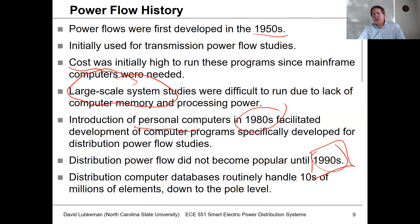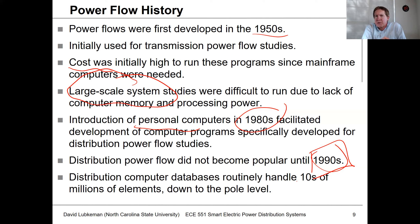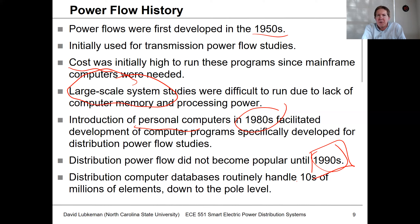The other thing about distribution is that distribution circuits have a lot more discrete elements than transmission. Nowadays we model almost down to the pole level, certainly down to the distribution transformer level. In a distribution database for a utility, they would have tens of millions of elements because they're basically modeling all the way down to where individual poles are located. A lot of times this is coming right out of a geographic information system and going right into computer analysis. Even though the circuits don't seem that complex from a modeling standpoint, they're actually a lot more complex than transmission.